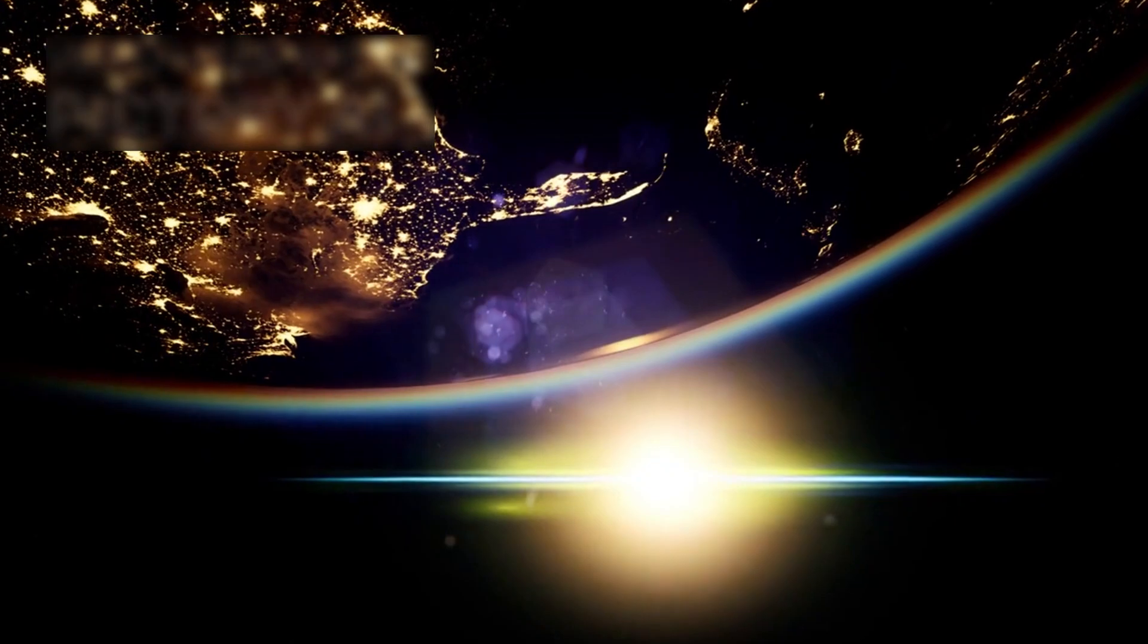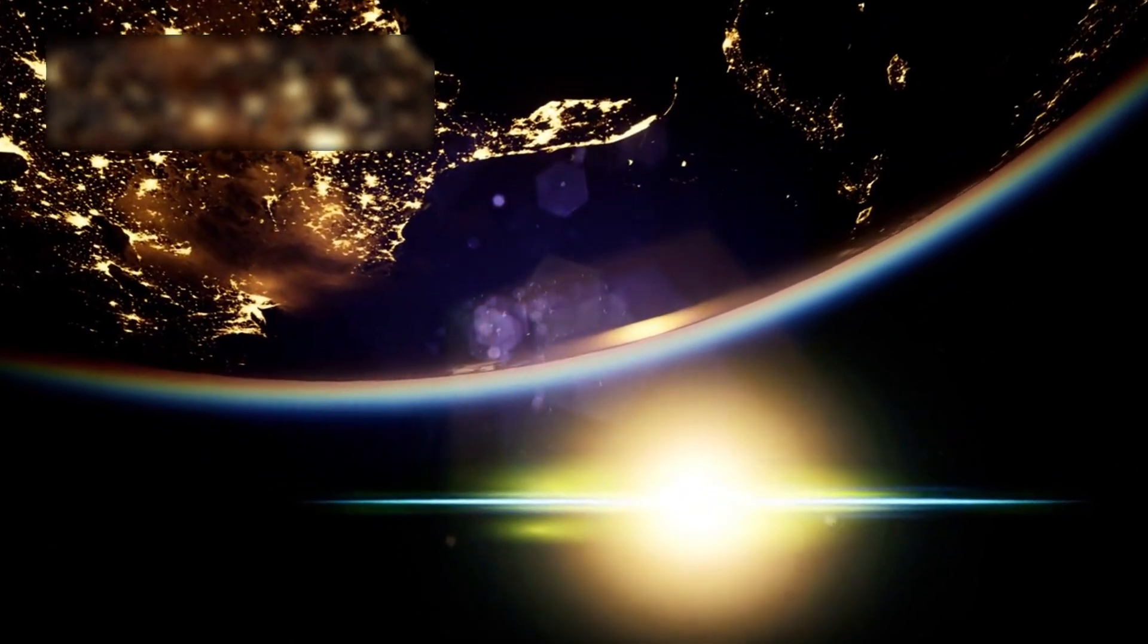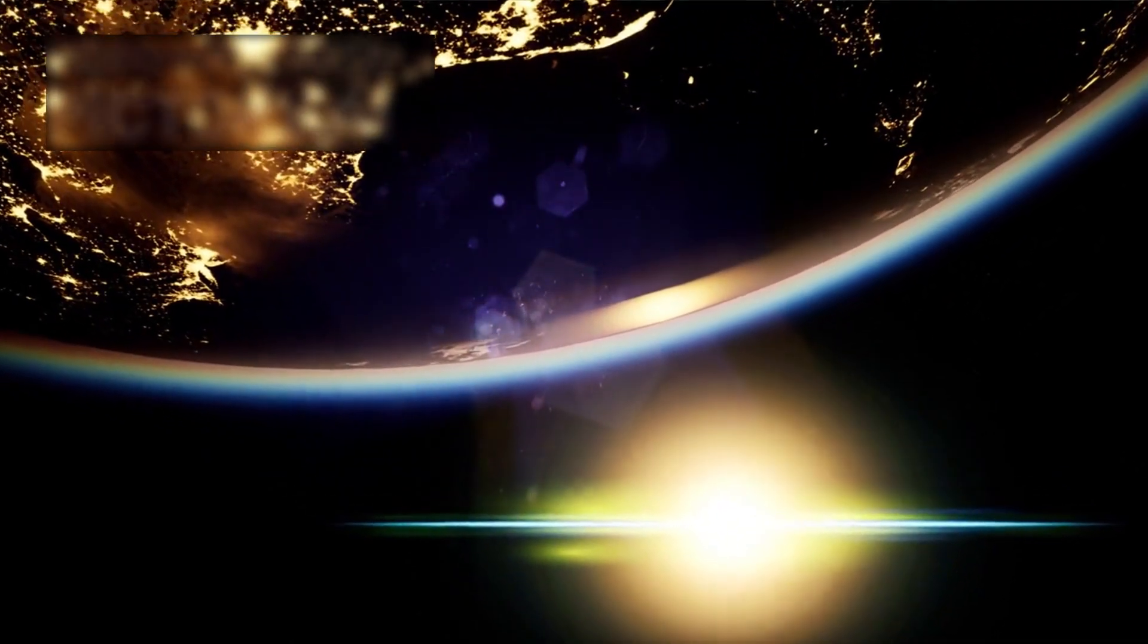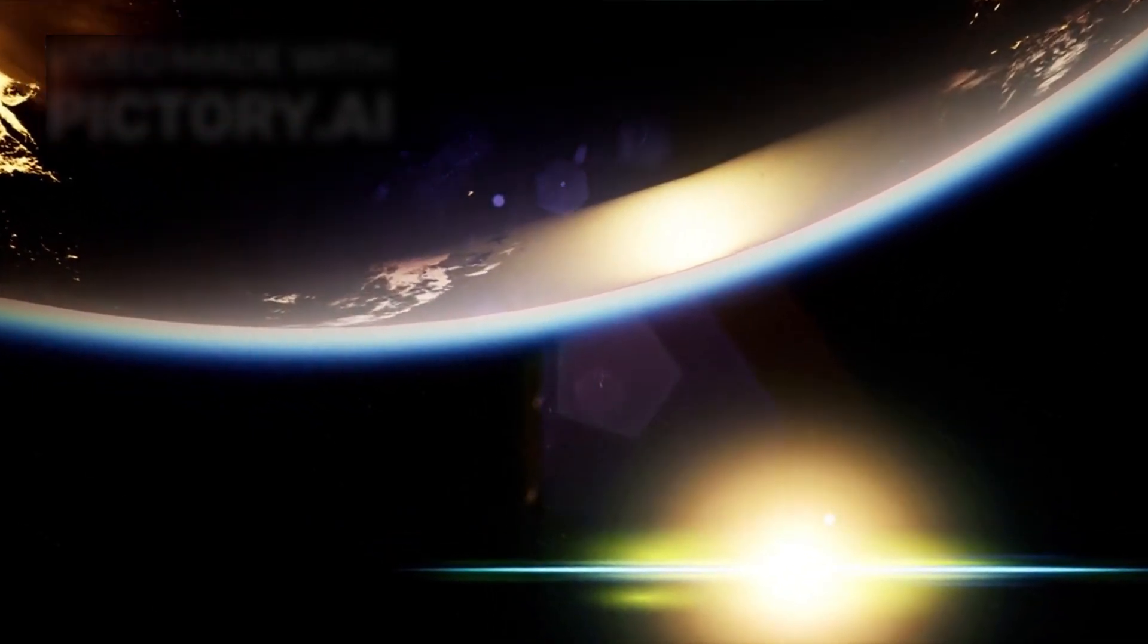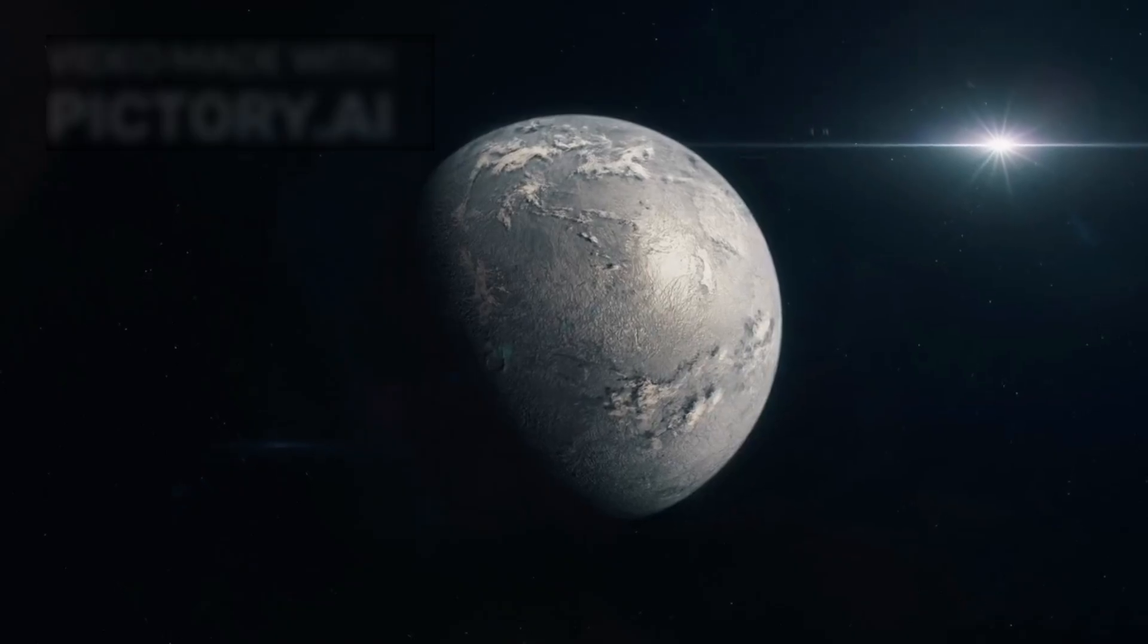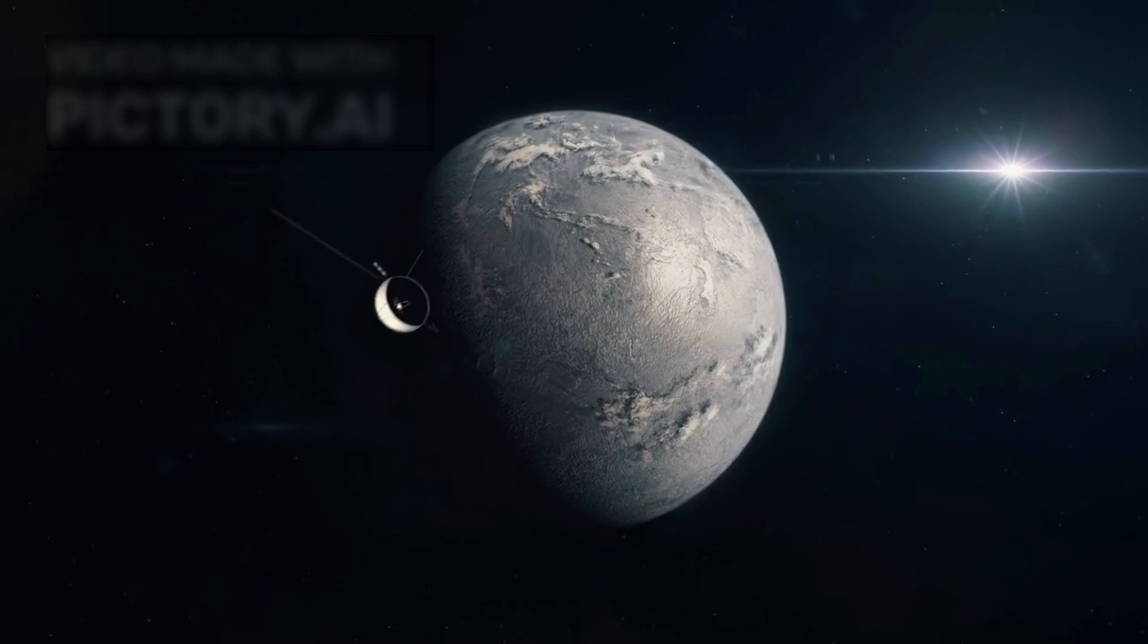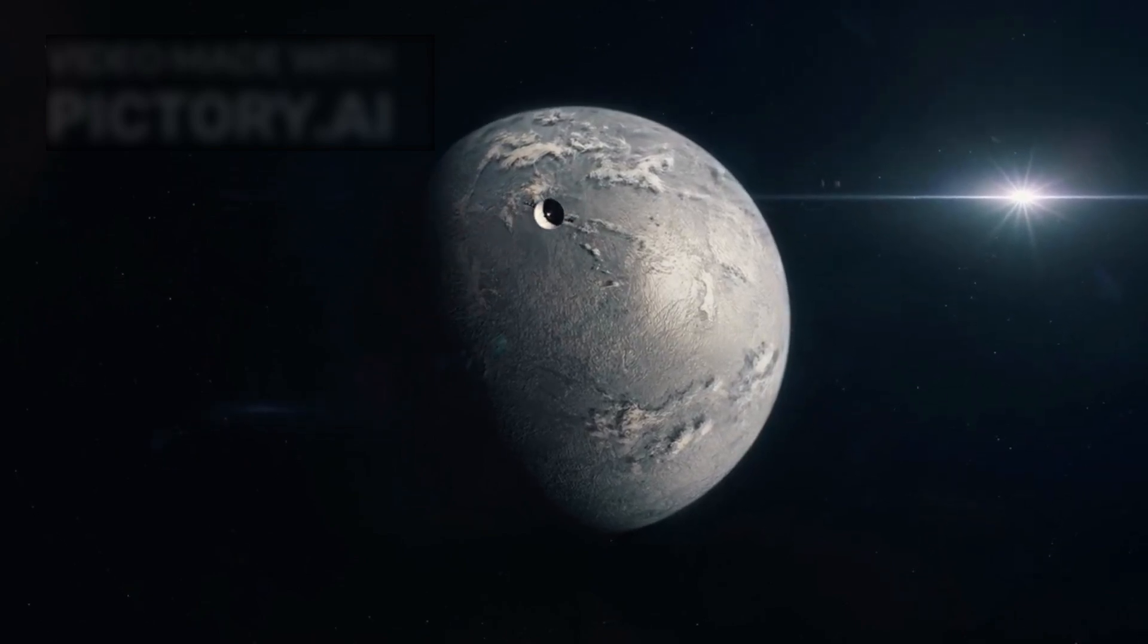As the planet revolves around Proxima Centauri, it experiences day and night cycles somewhat similar to Earth's, with intense heat during the day and cooler temperatures at night. However, Proxima B undergoes larger temperature variations influenced by its composition.